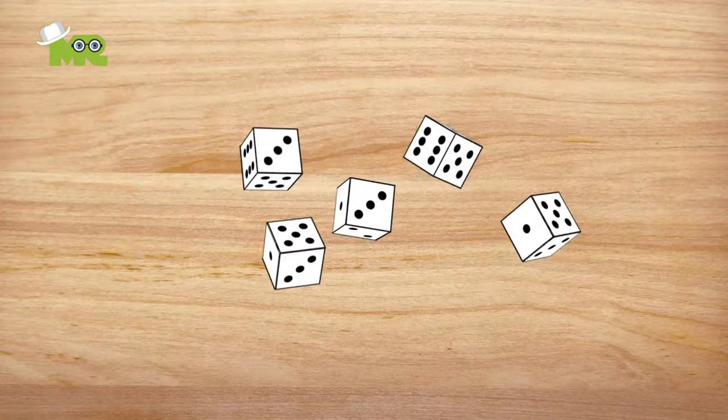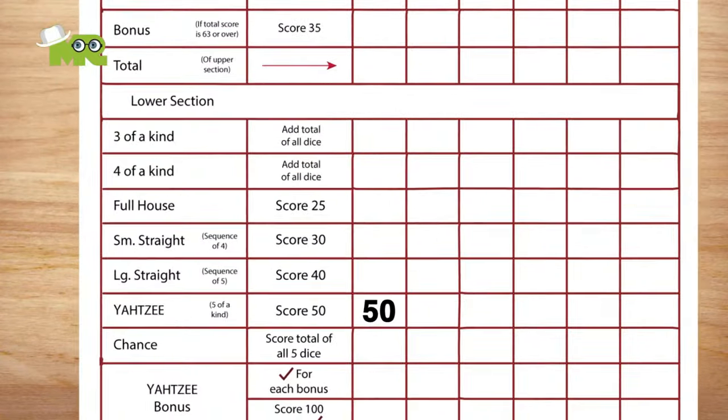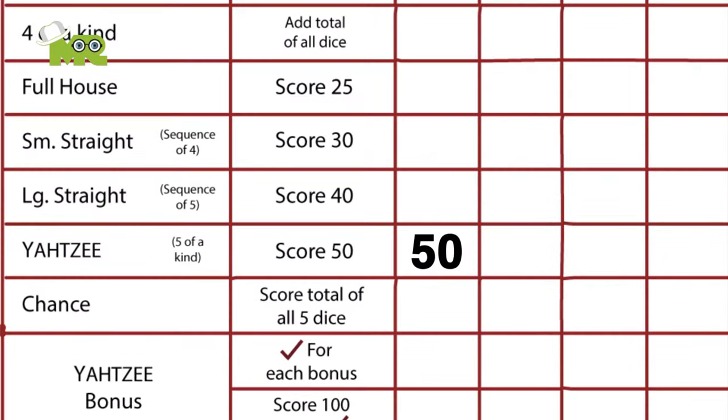Eight: A player gets a Yahtzee bonus if they get a second Yahtzee in the same game, and the Yahtzee box is checked and the scores are added up.